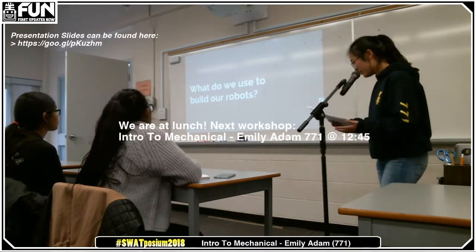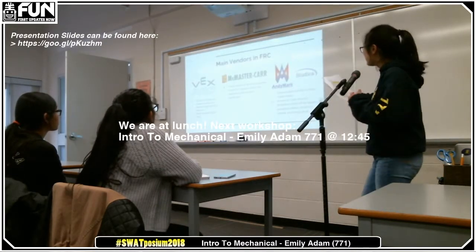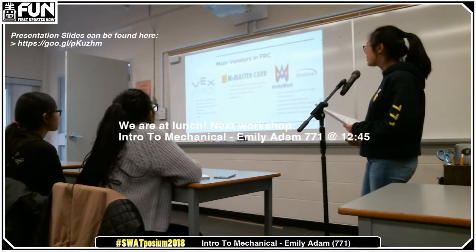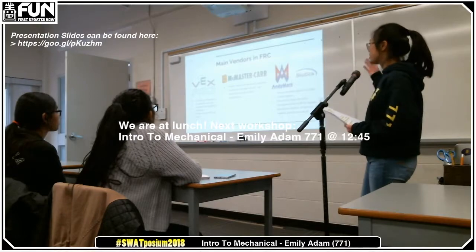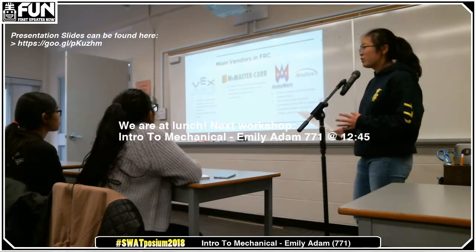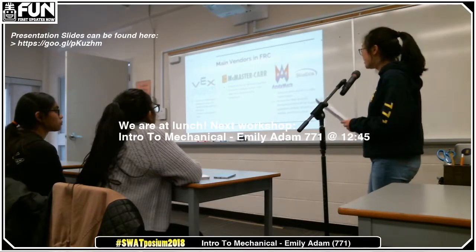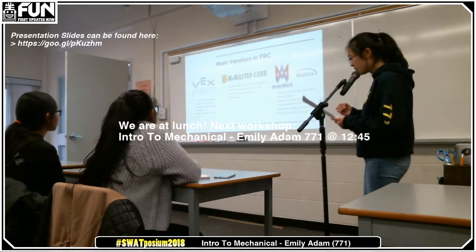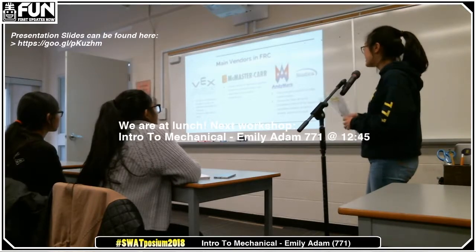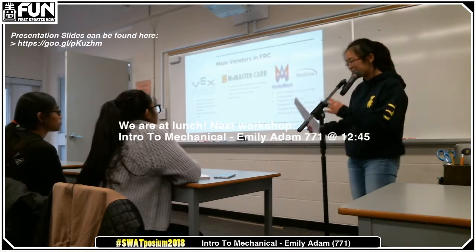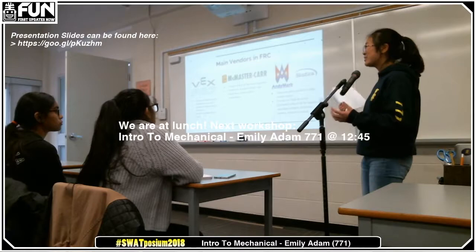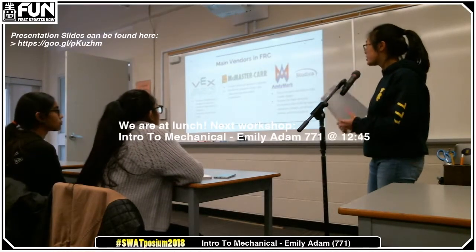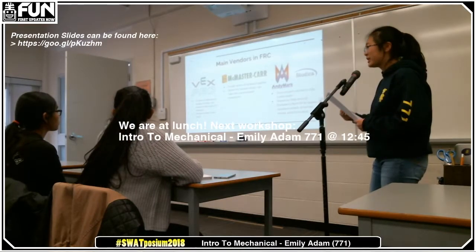What do we use to build robots? We have three main vendors in FRC, and all of these are online stores: VEX Pro, McMaster Carr, and Andy Mark slash Studica. VEX Pro focuses on designing parts to allow for clean and powerful robot builds. They sell a lot of commercial off-the-shelf parts — things you can easily assemble or put onto your robot — and they're known for their motion items.